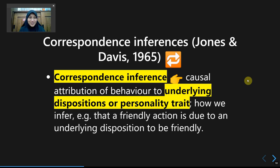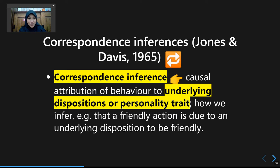This is the second part of the video, where we'll talk about attribution theories. I'm going to explain two different theories about how individuals attribute others' behavior and their own behavior to certain causes: the Correspondent Inferences Theory from Jones and Davis, and the Covariation Model from Harold Kelly.